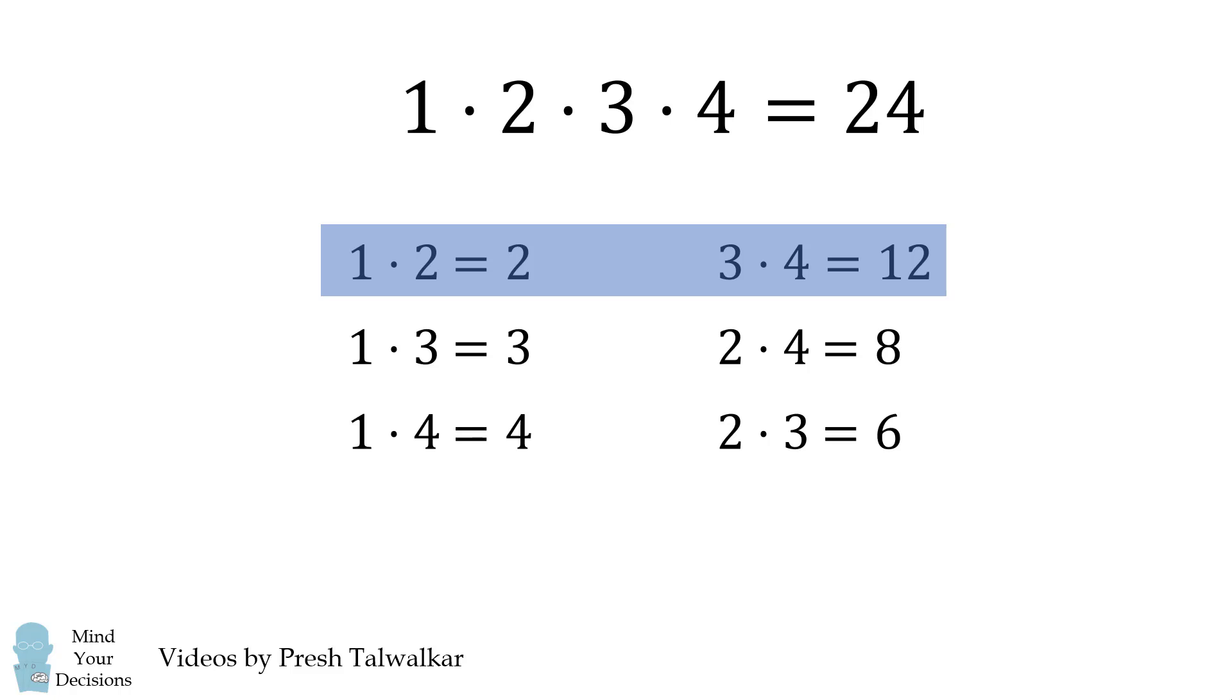Look in the very first line. If we take the product of these pairs, we have 2 times 12 which is equal to 24.